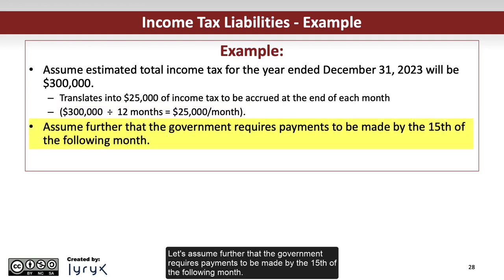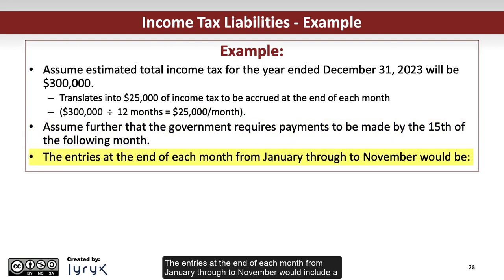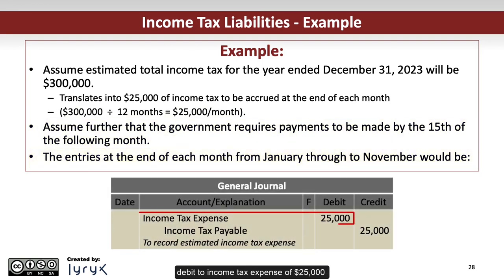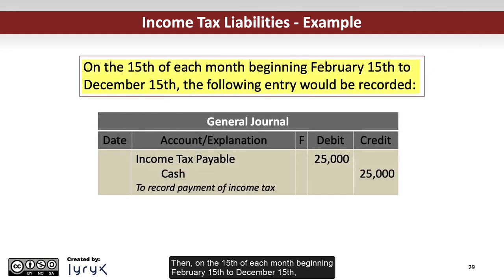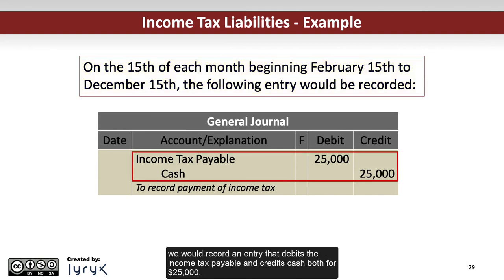Let's assume further that the government requires payments to be made by the 15th of the following month. The entries at the end of each month from January through to November would include a debit to income tax expense of $25,000 and a credit to income tax payable for $25,000. Then on the 15th of each month beginning February 15 to December 15, we would record an entry that debits income tax payable and credits cash, both for $25,000.